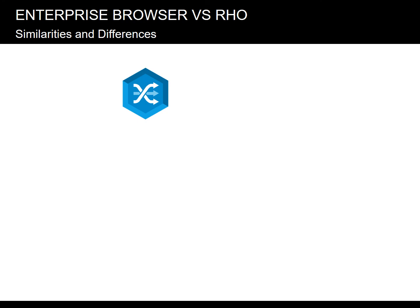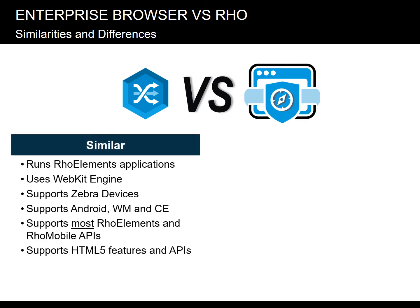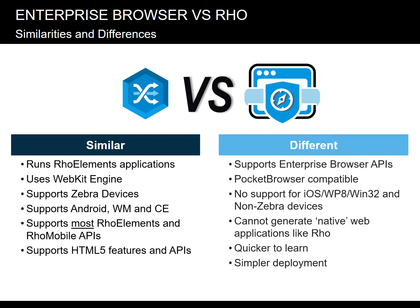And what about Rho? Enterprise Browser is similar to Rho Elements and Rho Mobile in several ways. It runs Rho Elements applications, uses the WebKit engine, and supports Zebra Android, Windows Mobile, and Windows CE devices. Enterprise Browser supports many APIs from Rho Elements and Rho Mobile, except the more complex ones such as ORM, Rho Connect Client, etc., as well as HDMI features and APIs. Enterprise Browser differs from Rho Elements and Rho Mobile in that it also supports Enterprise Browser and Pocket Browser APIs and Pocket Browser-compatible web views. Unlike Rho Elements and Rho Mobile, Enterprise Browser does not support iOS, Windows Phone, Win32, or non-Zebra devices. Enterprise Browser cannot generate native web applications or EXEs like Rho Elements.